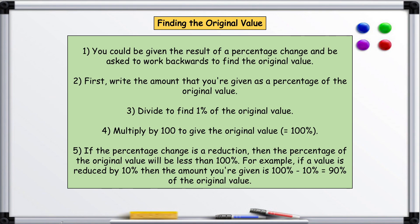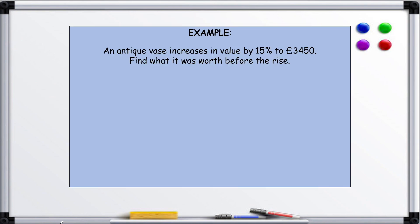An antique vase increases in value by 15% to £3,450. Find what it was worth before the rise. Okay, so it's important to remember that this value now is 15% higher. So if we're going to give this a value, this is going to be 115%.